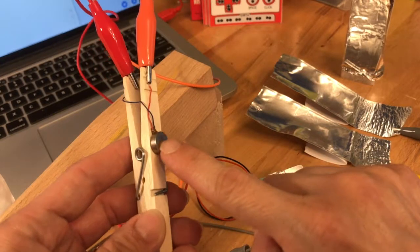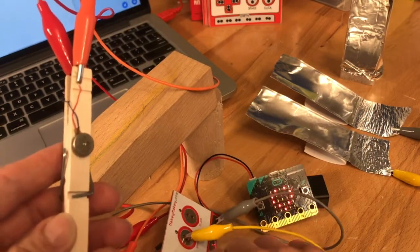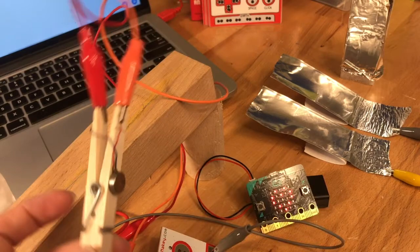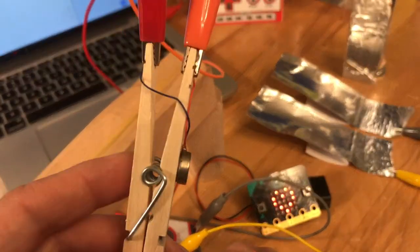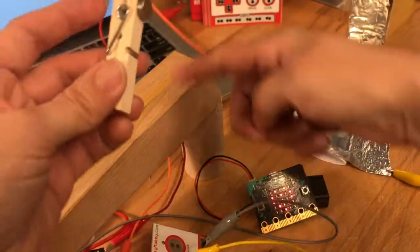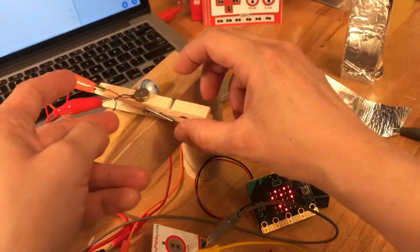So this is a vibration motor. This is to key out on the back of the Makey Makey, and this is to earth. Any key that's pressed will make it start working, so you can hear it's working. We're going to precariously put it here so that it holds the marble up.